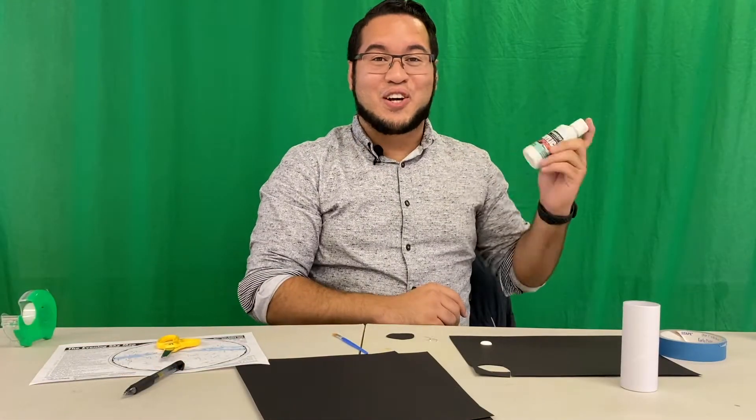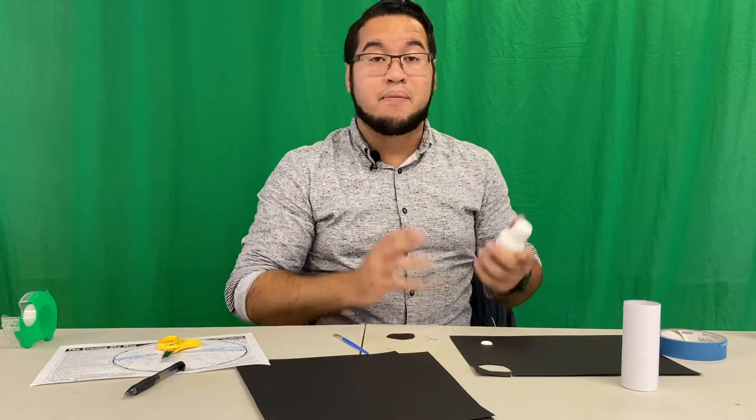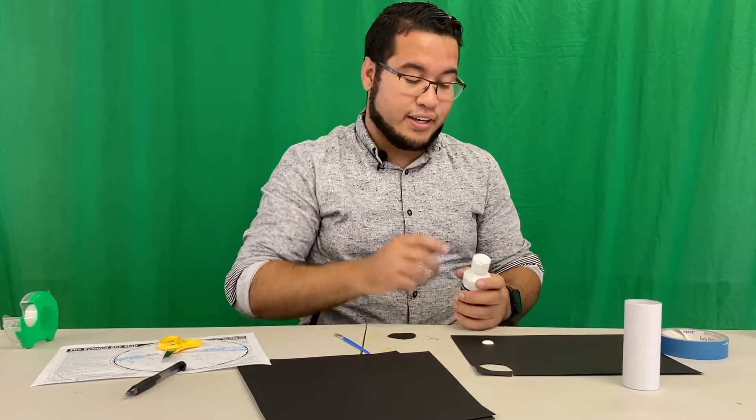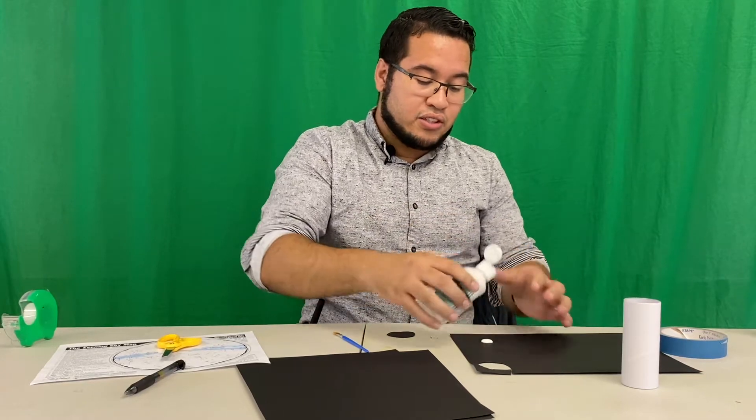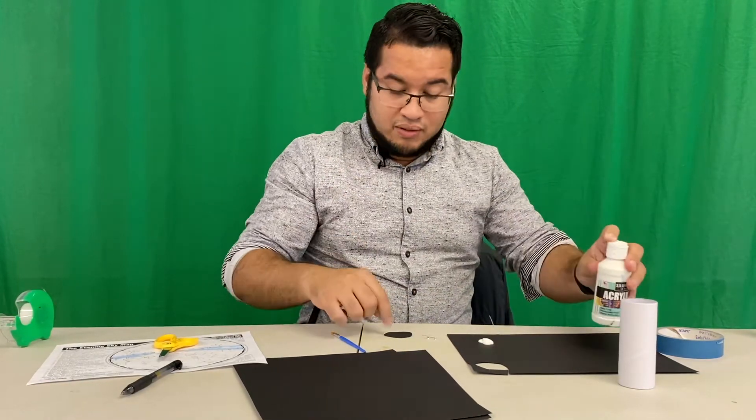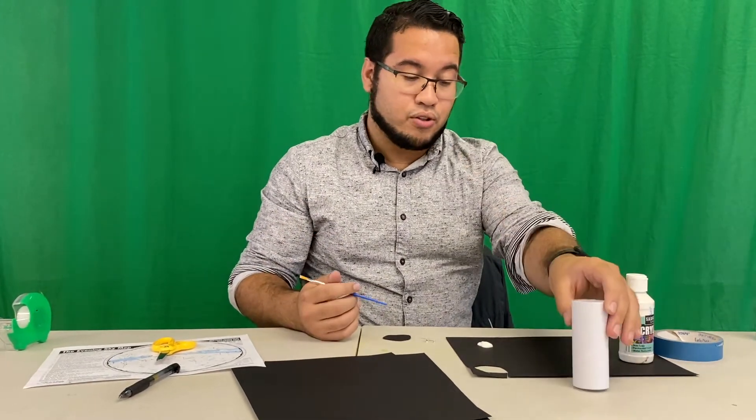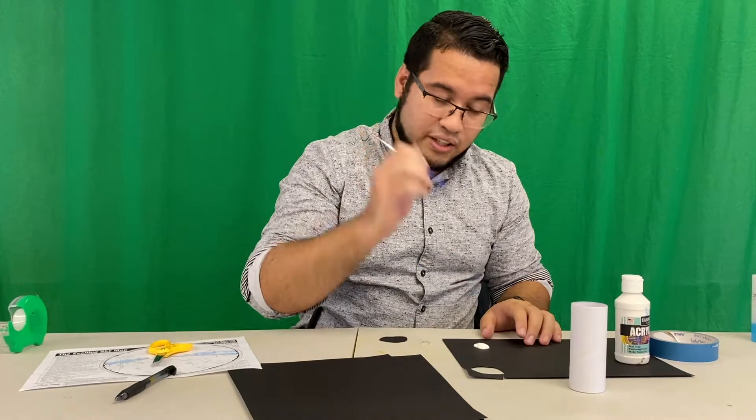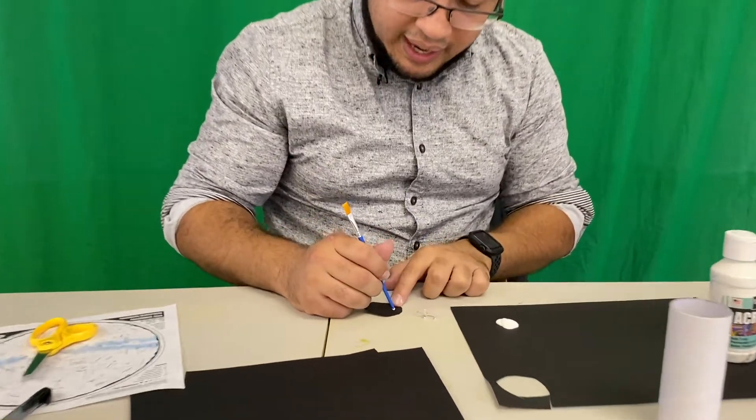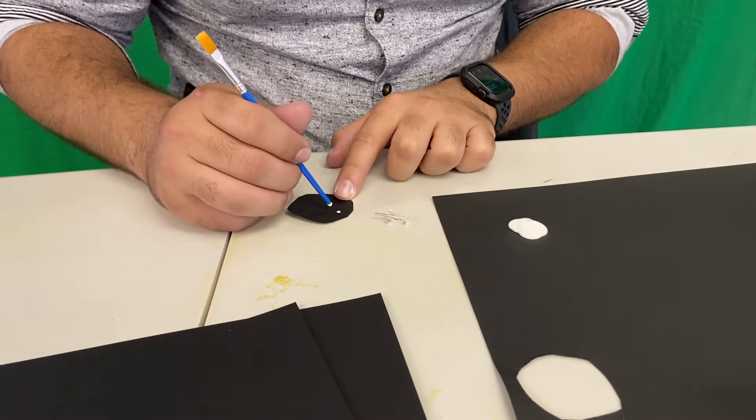Next thing we're going to do is we're going to go ahead and draw out our constellation. Now you can do this with some white paint but you can also do it with a white crayon or any other marker that will show up on our black construction paper. Now with these stars that we create we want to make sure that you do them very small because again our single sheet of paper here is not too big and it's got to fit around our little tube. I'm actually going to use the back end of my paintbrush here just to create some dots. Now after I create this constellation I want to see if you guys can guess which one I'm making.